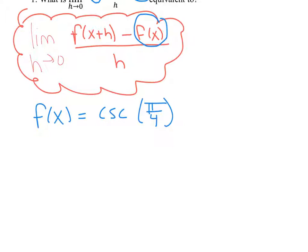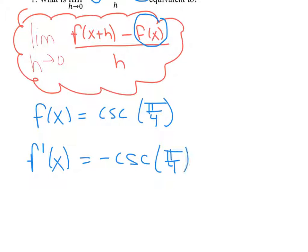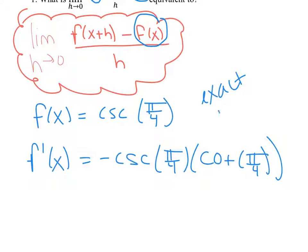They're really just asking you to find the derivative without doing the whole limit definition. So to find f prime of x, you have to remember what the derivative of cosecant is. The derivative of cosecant is negative cosecant, keep the π/4, times cotangent of π/4. This question requires you to give an exact value — no decimals and no rounding.